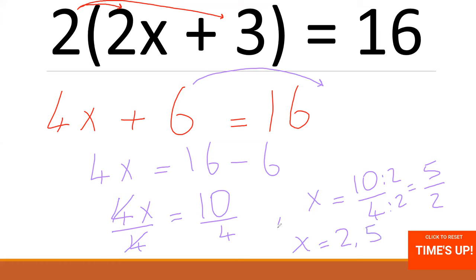X equals 2.5. If you substitute 2.5 for X: 2 times 2.5 is 5, and 5 plus 3 is 8, and 2 times 8 is 16. Question 2 done. Let's continue with the next question.